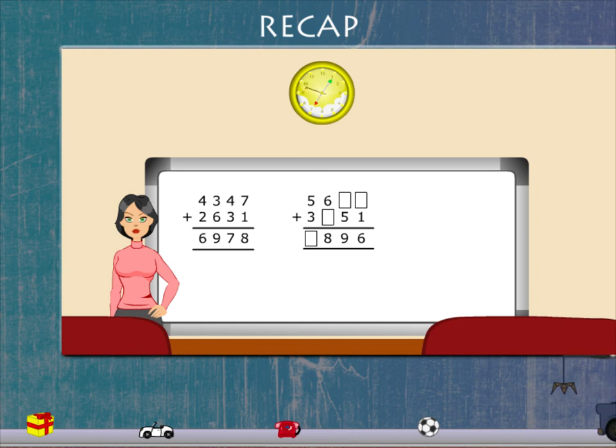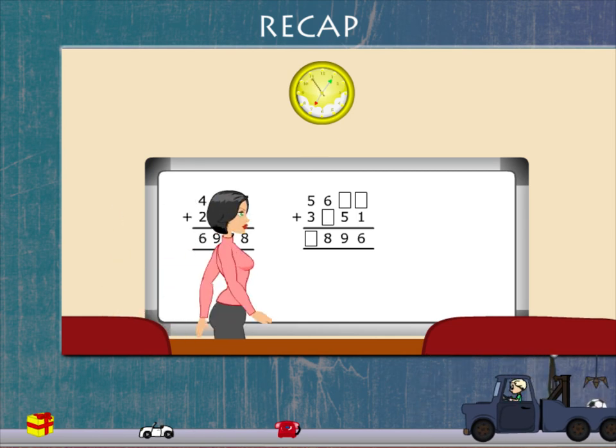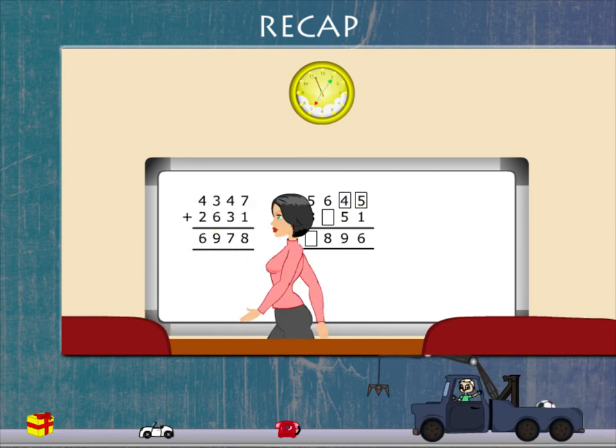Ma'am now begins with the ones and tens. She subtracts 51 from 96 to get 45.